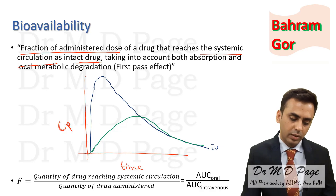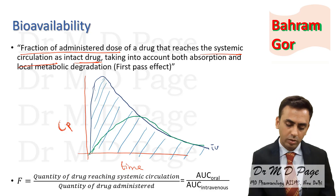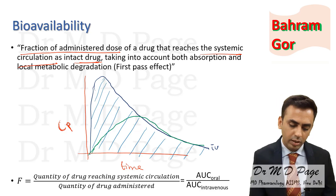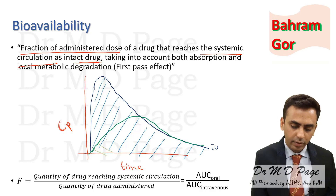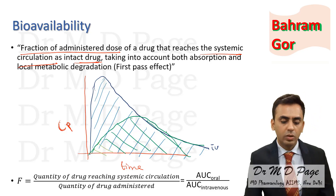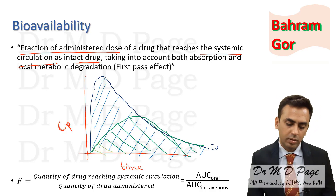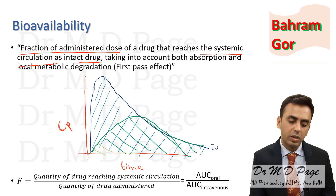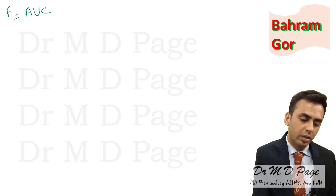The area under the curve for the IV route and the area under the curve for the oral route can both be calculated. Bioavailability can also be calculated using area under curve: it is simply the area under curve by oral route divided by the area under curve by IV route.